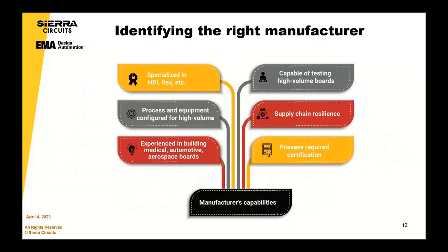Identifying the right manufacturer is really, really key. I'm just going to leave this here as a graphic that you can read later. But it really starts with the manufacturer's capabilities — understanding what they are, understanding the company, how they're managing their supply chain, what sort of certifications they have, what type of technical capabilities they have. These are really all of the key stages which seem important in choosing the right manufacturer from the get-go.